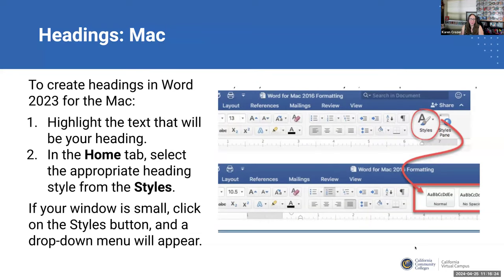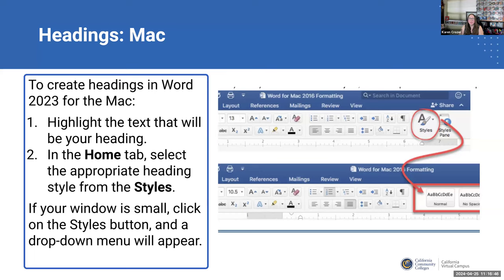Similarly in Word on Mac, highlight the text and look for an A with a paintbrush. Sometimes if your window is big enough, it'll just show you those styles — normal, heading one, heading two. But if you can't see it, look for the heading button with the little arrow and it will break out into more options. Hopefully you'll have access to this presentation afterwards, but we also put in some links for additional resources, separated for Windows and Mac since it can be a little different.